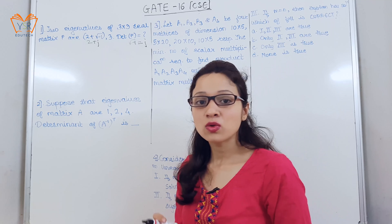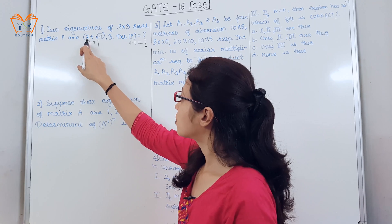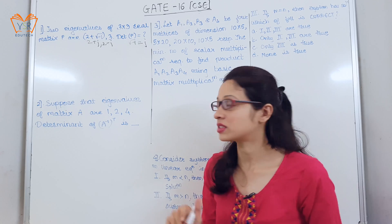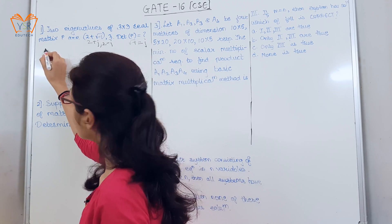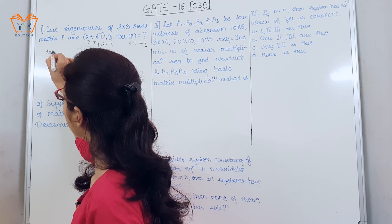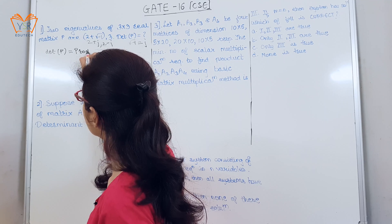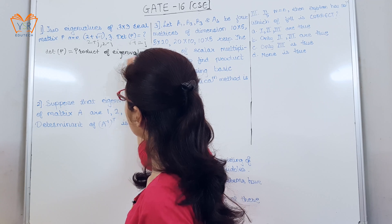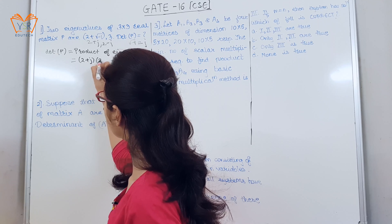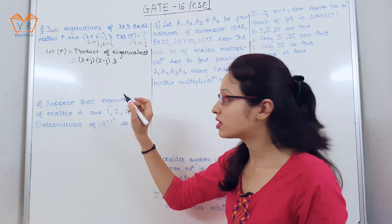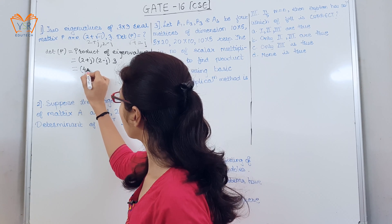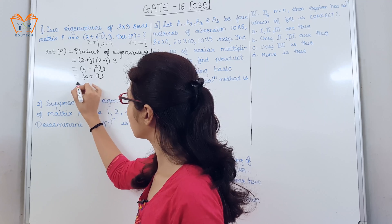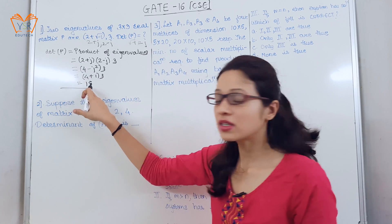Since eigenvalues are roots of the characteristic equation, if one eigenvalue is 2 plus j, the other will be 2 minus j because roots occur as complex conjugates. We know that the determinant of any matrix equals the product of its eigenvalues. So the three eigenvalues are 2+j, 2−j, and 3. Multiplying: (2+j)(2−j) = 4 − j² = 4 + 1 = 5, then 5 × 3 = 15. So the determinant of P is 15.